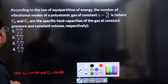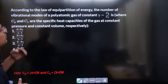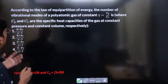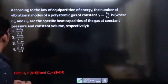According to the law of equipartition of energy, the number of vibrational modes of a polyatomic gas of gamma Cp by Cv, where Cp and Cv have their usual meaning is.